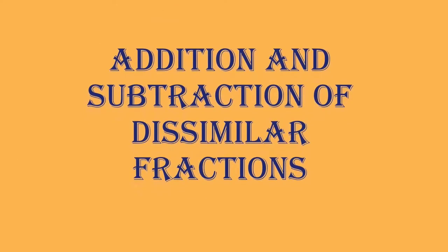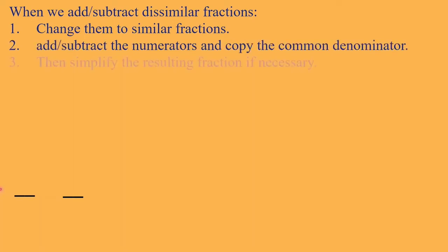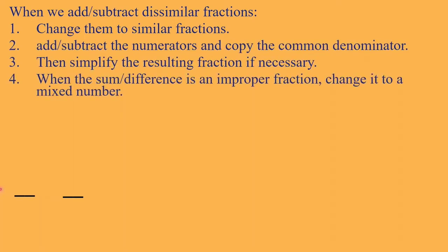Now let us proceed to addition and subtraction of dissimilar fractions. When we add or subtract dissimilar fractions, there is only one step we add at the beginning: we need to change them to similar fractions first. Once they are similar, we just repeat what we did before.